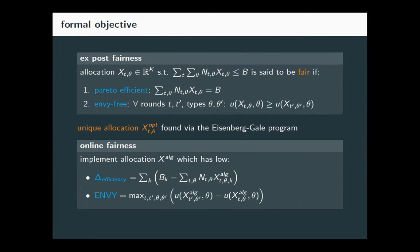Our relaxed notion of approximate fairness is very natural. We relax Pareto efficiency and envy-freeness into two objectives. First is Delta efficiency — the distance to an efficient solution, which you can think of as waste: the sum over all resources K of the budget minus the amount allocated. Second is Delta envy — the maximum across every two agents of how much the first agent values the second agent's allocation minus the first agent's own allocation.